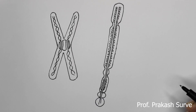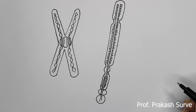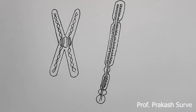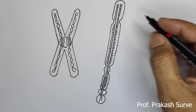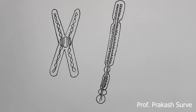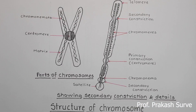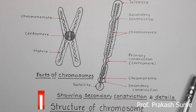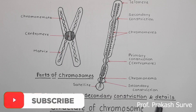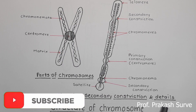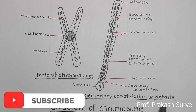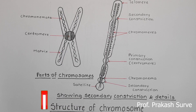Here we have finished the structure of the chromosome. Now we label the parts and then we will continue. So this is what we have completed in the easy steps — label all the parts. This diagram may come for 2 or 3 marks. Thank you. If you like my channel, subscribe and share with your friends.